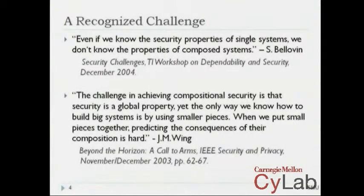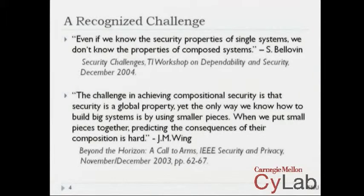Another observation due to Jeanette Wing — and this is going to show up later on in the talk — is that the challenge in achieving compositional security is that security is a global property, yet the only way we know how to build big systems is by using smaller pieces. But when we put small pieces together, it is difficult to predict the consequences of their composition, and that is precisely the problem of compositional security that we are trying to address in this work.